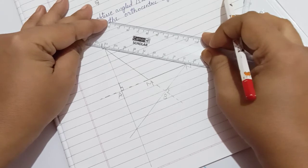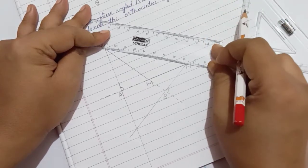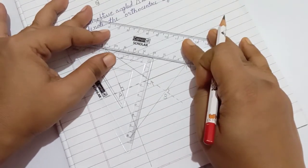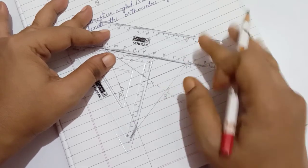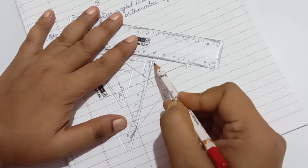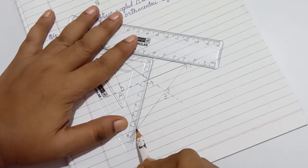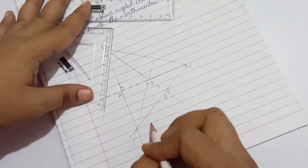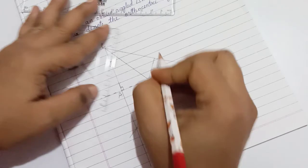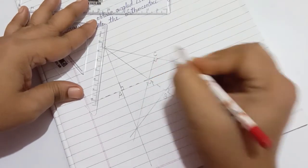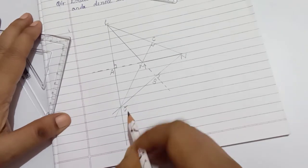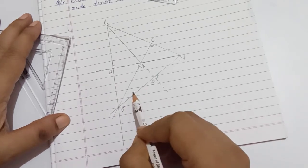Align the scale to line segment LN. Slide the set square to reach point M. Extend the line altitude.